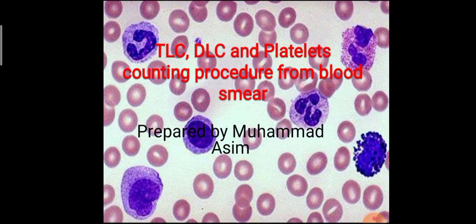Today we will learn about the procedure of counting TLC, DLC, and platelets from a blood smear. First, let's discuss TLC. TLC is basically the total count of WBCs present in our body. Leukocytes are also known as WBCs. Normally we have 4,000 to 11,000 leukocytes or WBCs present in our body. WBCs are of five types: neutrophil, eosinophil, basophil, lymphocyte, and monocyte.